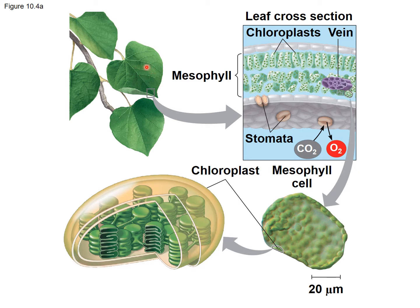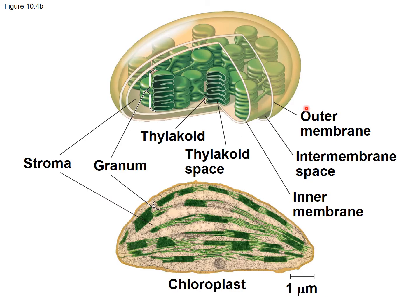In the epidermis there are specialized cells that open and close, allowing gases like carbon dioxide and oxygen to pass through — this is where CO2 enters and oxygen exits the plant. Looking at the chloroplast, there is an outer membrane and an inner membrane with an intermembrane space between them. Inside the inner membrane is a semi-fluid substance called the stroma — analogous to the cytoplasm — in which thylakoids float.